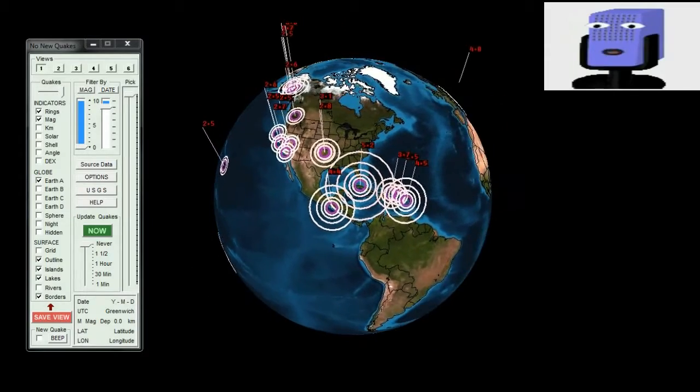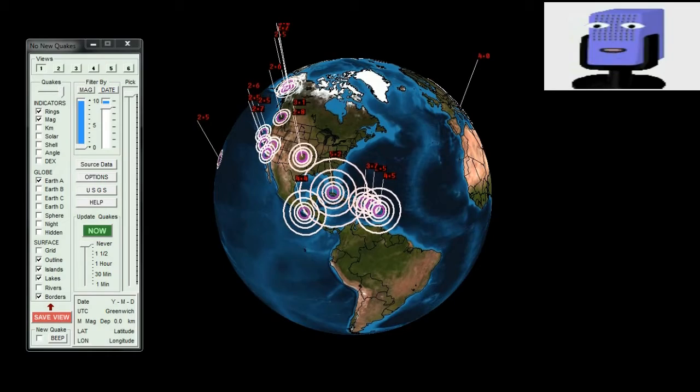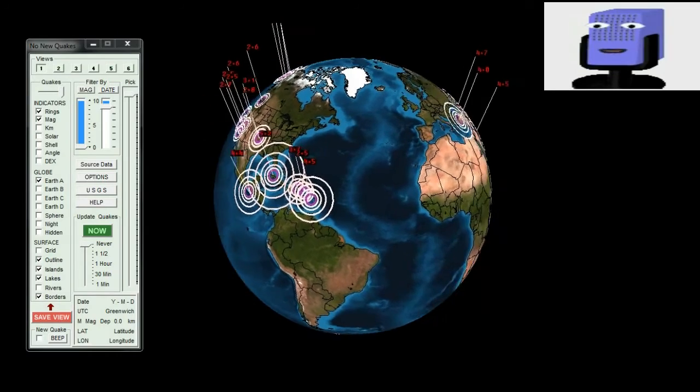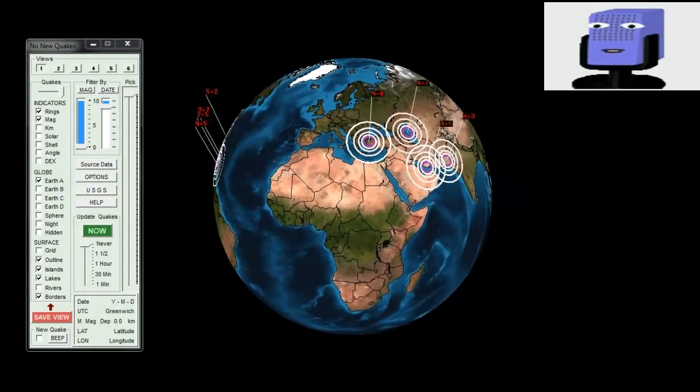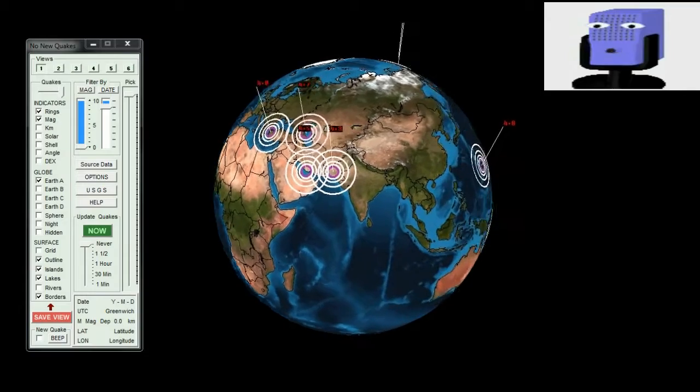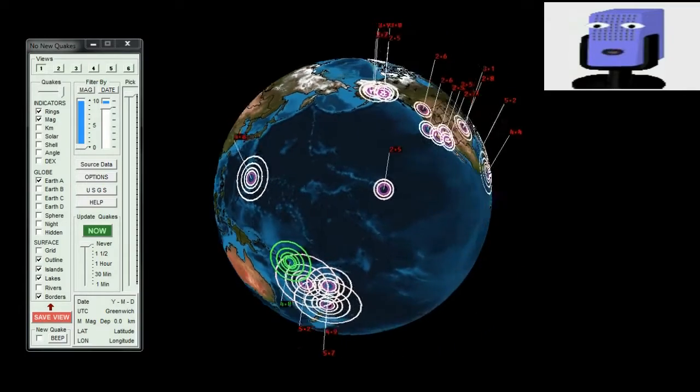The January 9th, 2014 M5.1 earthquake in the Gulf of Mexico occurred along the northern coast of west-central Cuba at shallow crustal depths, 28 kilometers from Coralillo, Cuba and 172 kilometers east of Havana, Cuba.